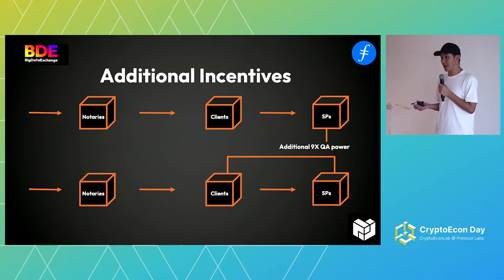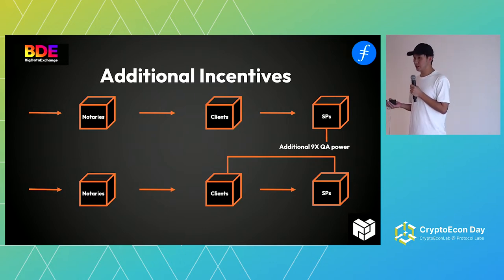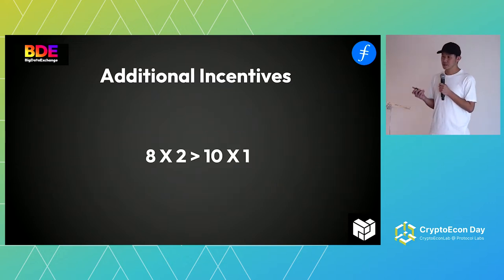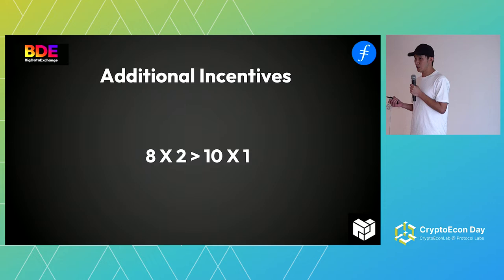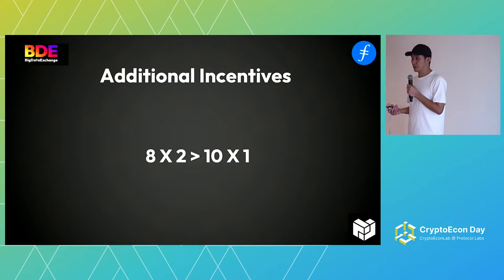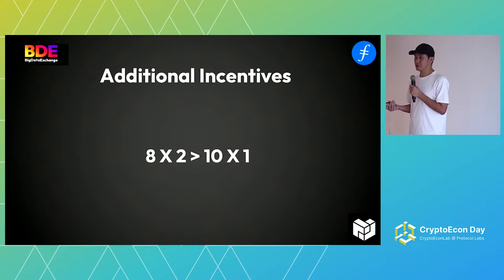I want to address the elephant in the room. It seems like SPs are passing some of their rewards to clients, but that's not really the case. Because having more power is always going to be better — perhaps you can do the deal twice as fast, or perhaps you can do two deals instead of one. There are a lot of assumptions here: is there storage capacity available, maybe there are a lot of costs. But the main point is: let the market decide. It may not be a zero-sum game.